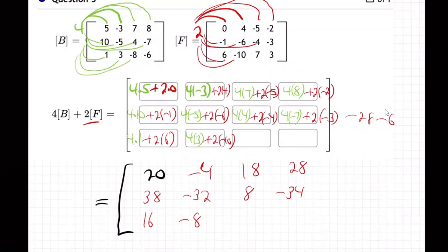Two more. Four times minus eight and plus two times seven. What's that? Minus 32 plus 14. Minus 32 plus 14 is minus 18.